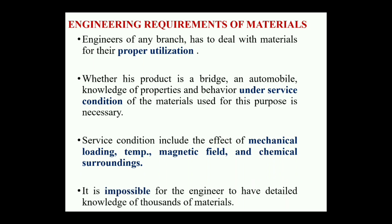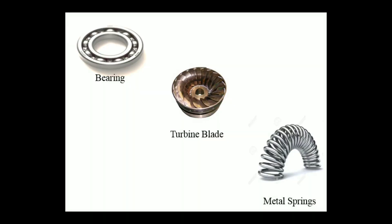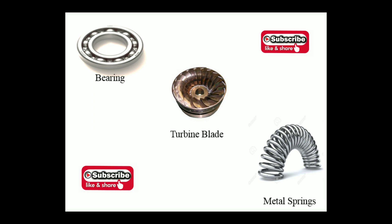Let us see some applications of engineering materials. The first is bearing materials. The function of a bearing is to transfer smooth motion, so bearings should be harder and have low weight, considering low density. They should have good physical properties like dimensional accuracy and resistance to corrosion. An important part is self-lubricated materials.